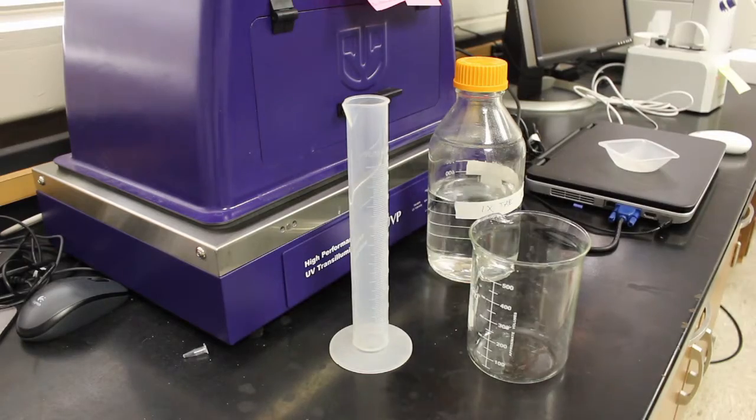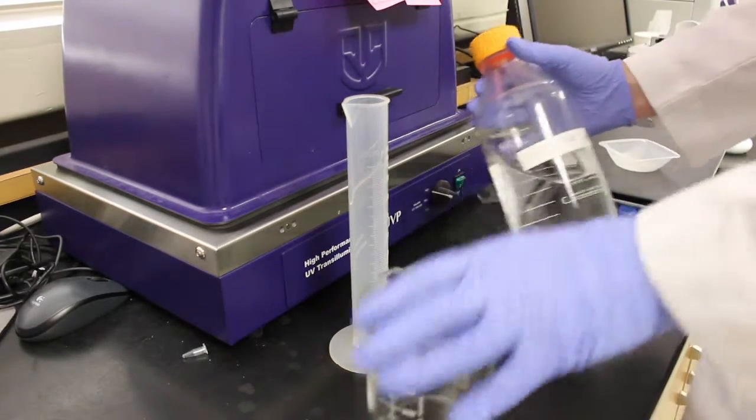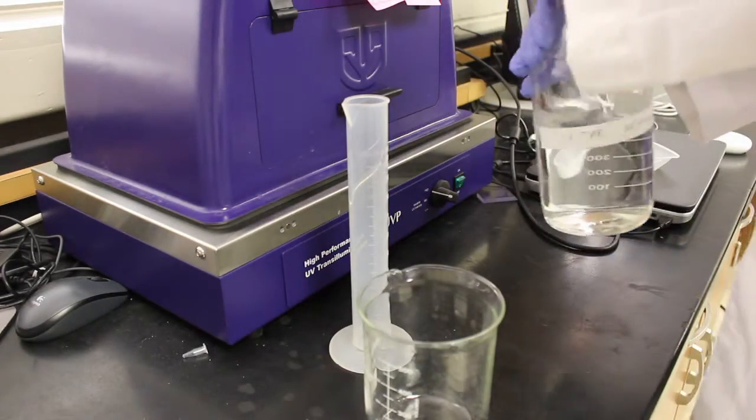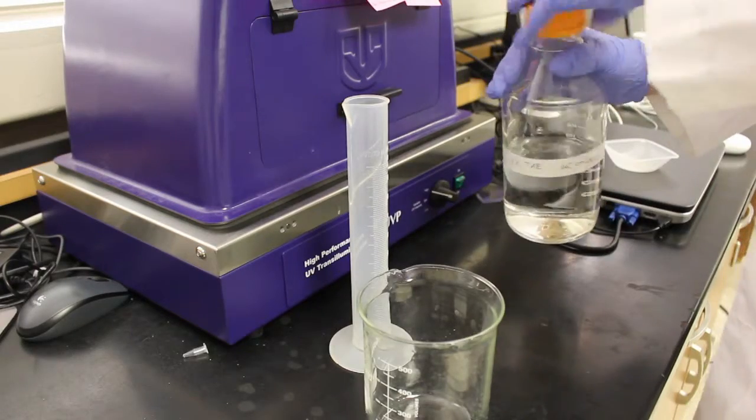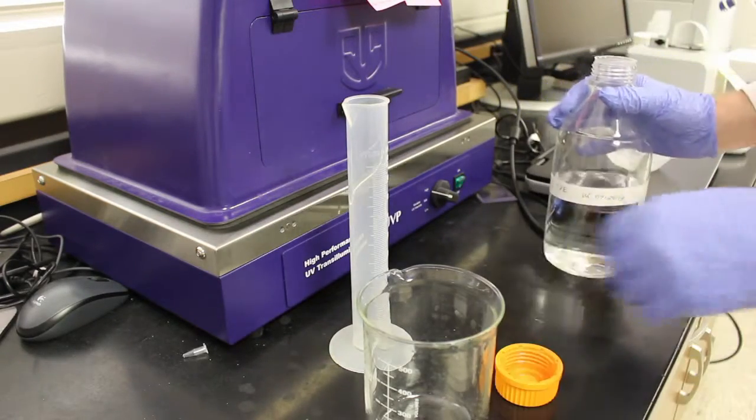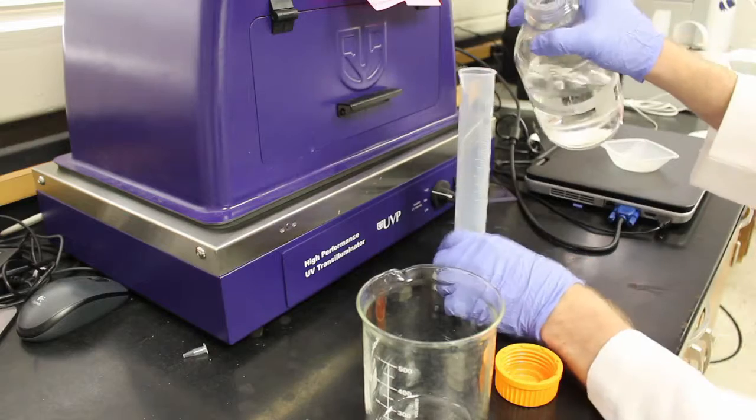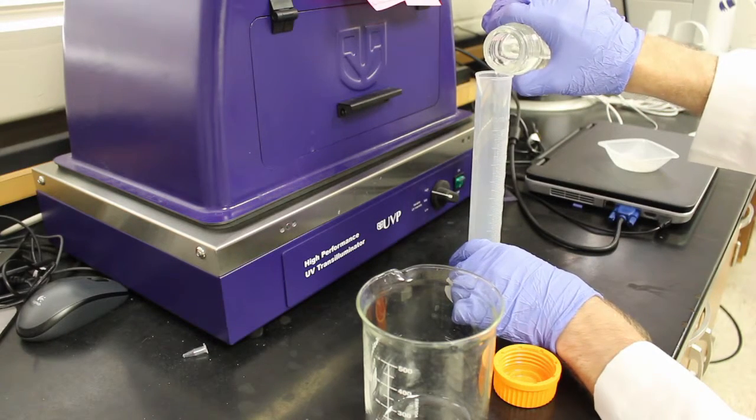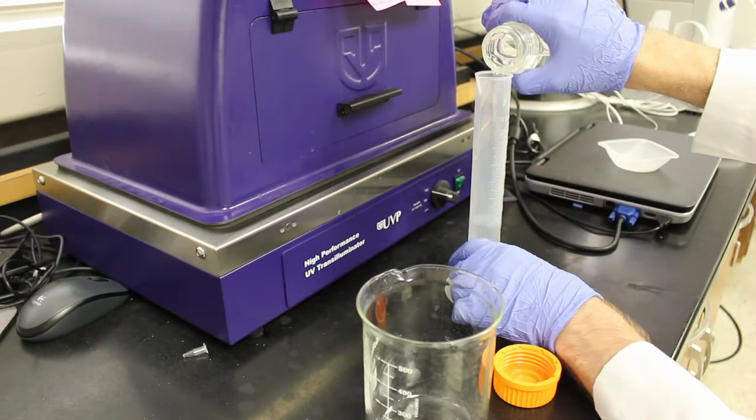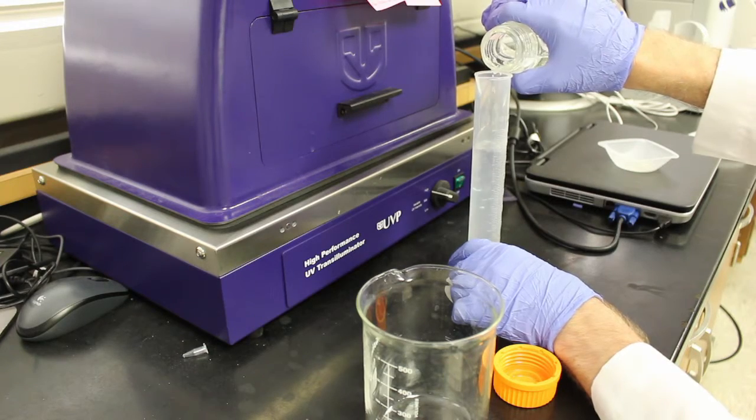In addition to agarose, we'll be using 100 milliliters 1X TAE buffer as a solvent. TAE contains a mixture of tris base, acetic acid, and EDTA. Together, these compounds allow electrical conduction and prevent ions from interacting with DNA samples. Other buffers, such as TBE, can be used as well depending on the application.